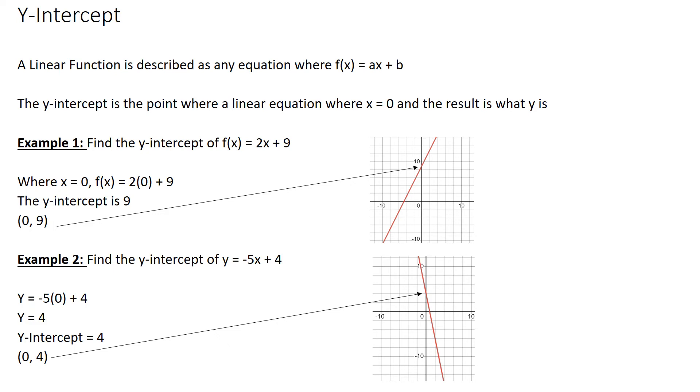The y-intercept, y equals negative 5x plus 4, it's going to be 4, you can see it right there, just like you see the 9 above it. I put in 0 for x, negative 5 times 0 is 0, it's plus 4. And when I graph negative 5x plus 4, you see that y-intercept, or intercepts the y-axis is at 0, 4.